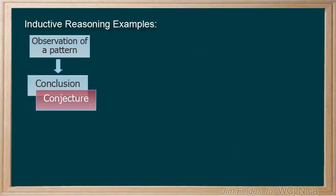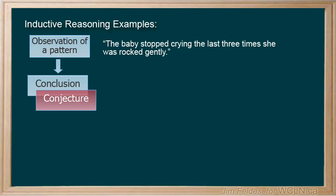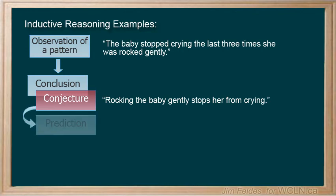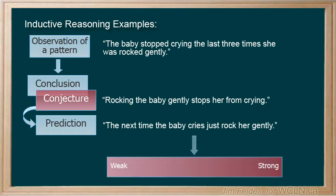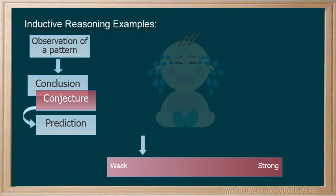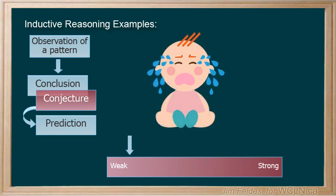What do you think about the certainty of this pattern? The baby stopped crying the last three times she was rocked gently. Rocking the baby gently stops her from crying. So we might think we've got this figured out, and that the next time she cries, all we need to do is rock her gently. If you've had any time caring for a baby, you'll know they're very unpredictable. So this conjecture would be weak. It would be great if being a parent were that easy.